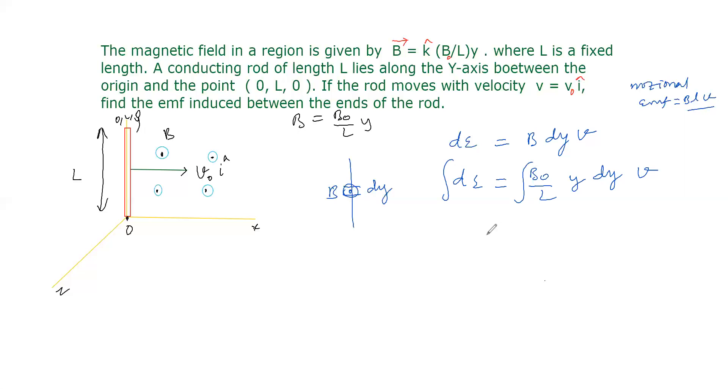This dE now we are integrating. Before integrating we take out B0/L and v. Inside the integral, v × dy is there, integrating from 0 to L. We get B0/L × v. Integrating y gives y²/2, substituting 0 to L.